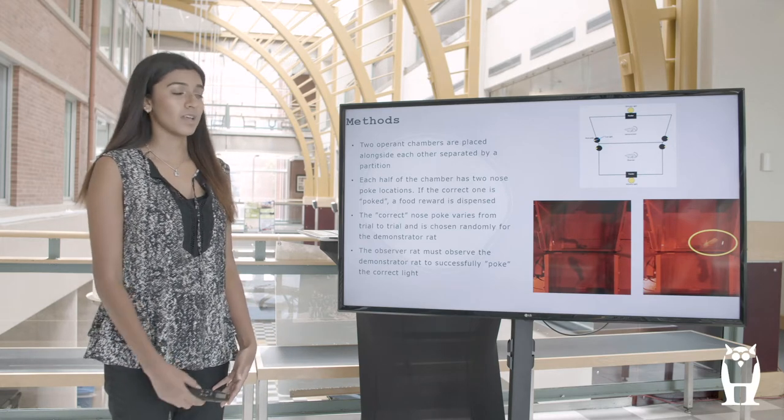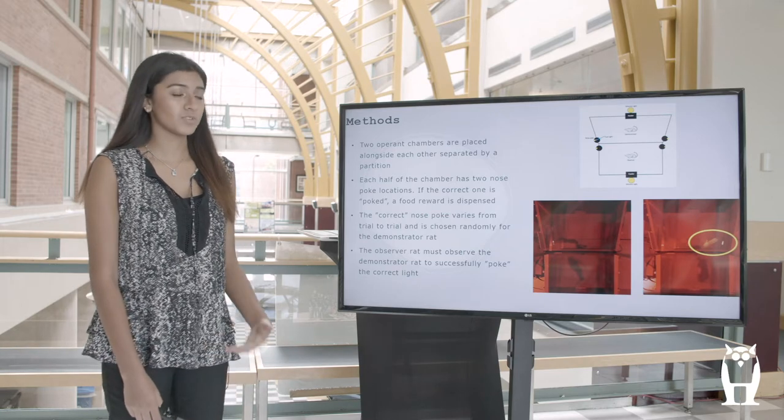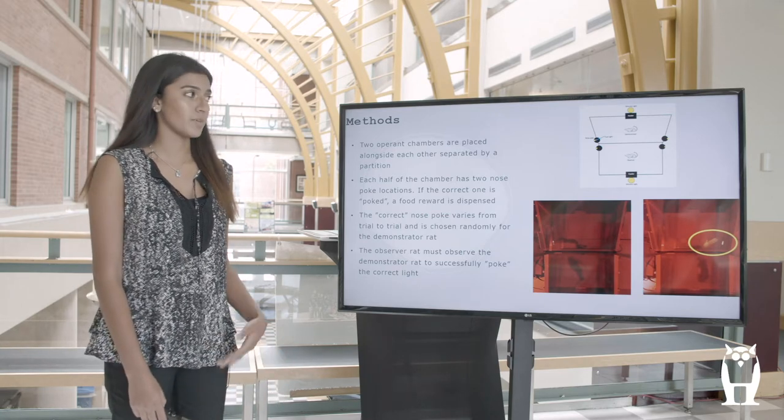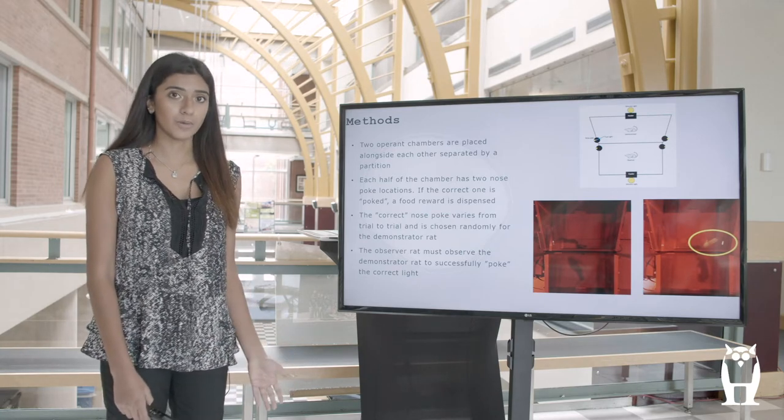If it went to the correct light it would receive a food reward. If it went to the opposite side it would not receive a food reward, and this was done to help stimulate observational learning in an operant chamber.